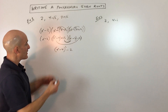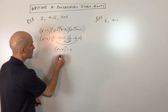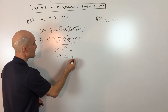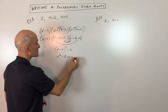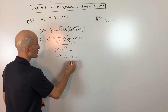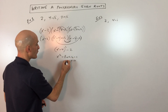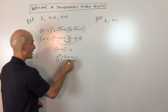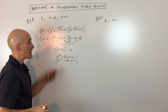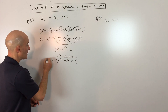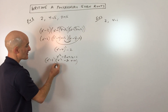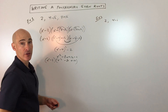Now let's go ahead and simplify this a little bit further. This is x squared minus 8x plus 16 minus 2, which we could really write as x squared minus 8x plus 14. Now we're just going to bring down the x minus 2, and we're going to distribute the x to all three of these and the negative 2 to all three of these.